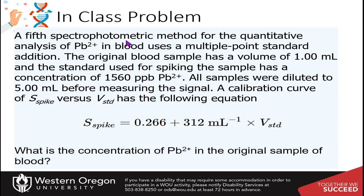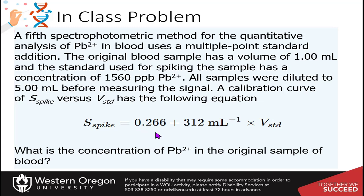Here is a spectrometric method for the quantitative analysis of lead in blood using multiple-point standard addition. The original blood sample has a volume of 1 mL, and the standard used for spiking has a concentration of 1560 parts per billion lead. All samples were diluted to 5 mL before measuring the signal, and a calibration curve of S-spike versus S-standard has the following equation — again written as y = b + mx, where this term is the slope and this is the y-intercept. When you set S-spike to 0, you can calculate the x-intercept, which gives you the concentration of your analyte.